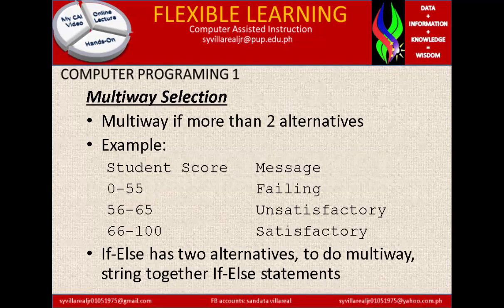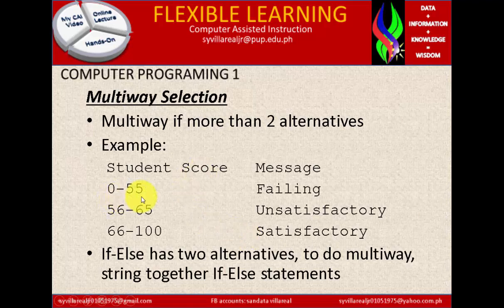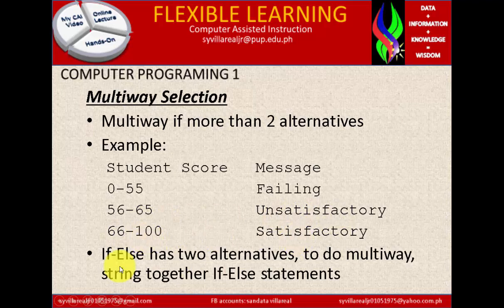Now, multi-way selection — multi-way if more than two alternatives. Example: student score 0 to 55 gives a failing message; 56 to 65 gives unsatisfactory; 66 to 100 gives satisfactory.